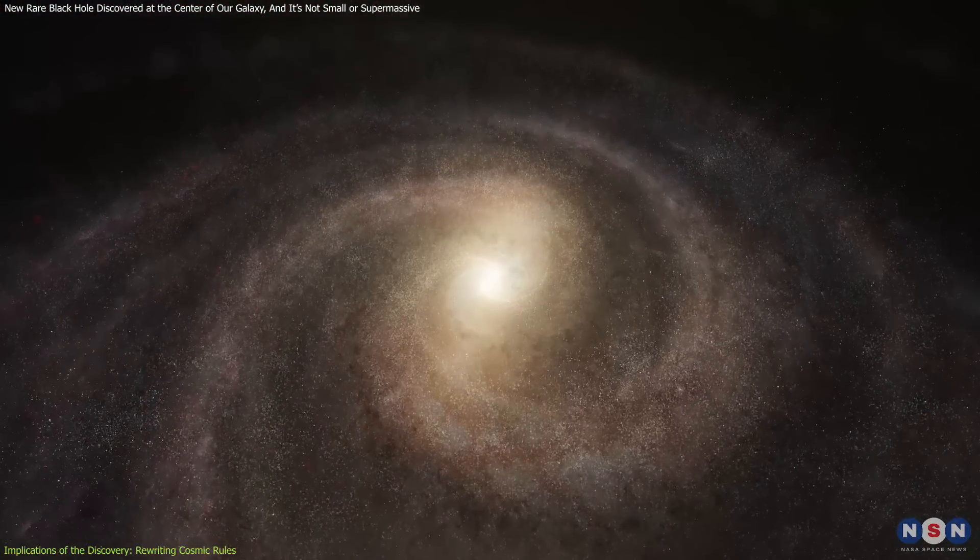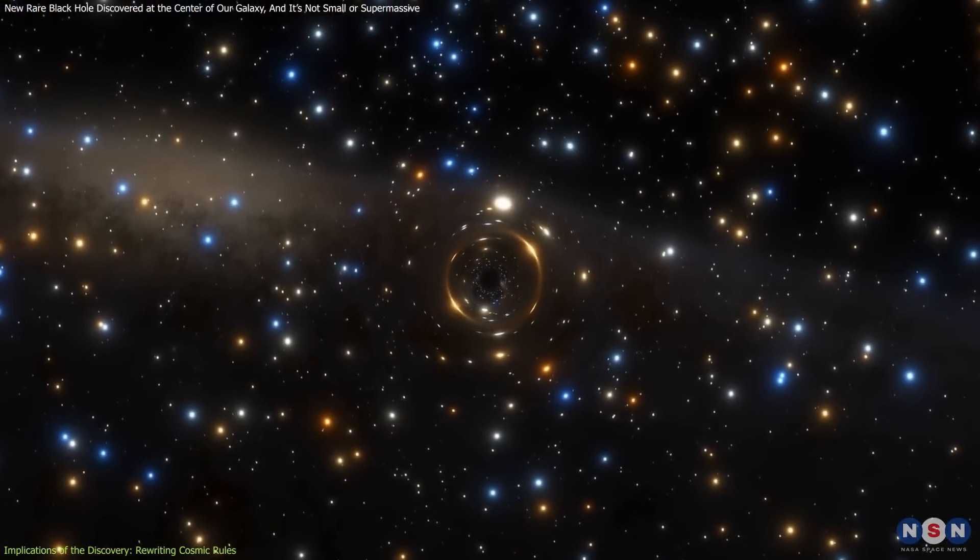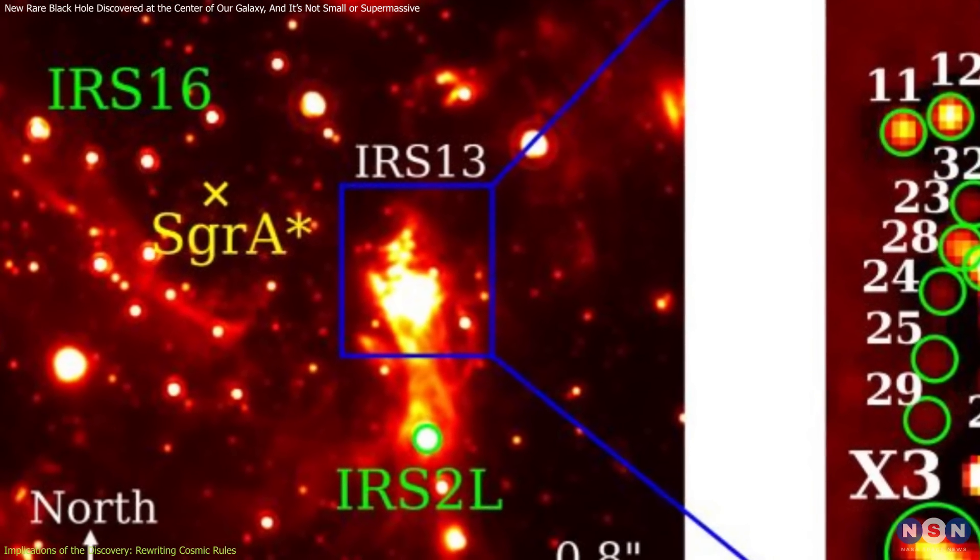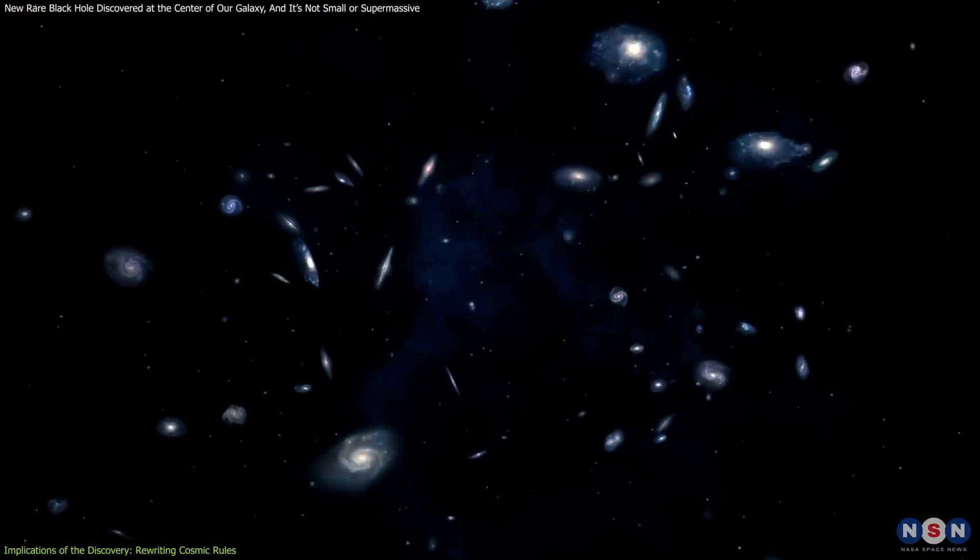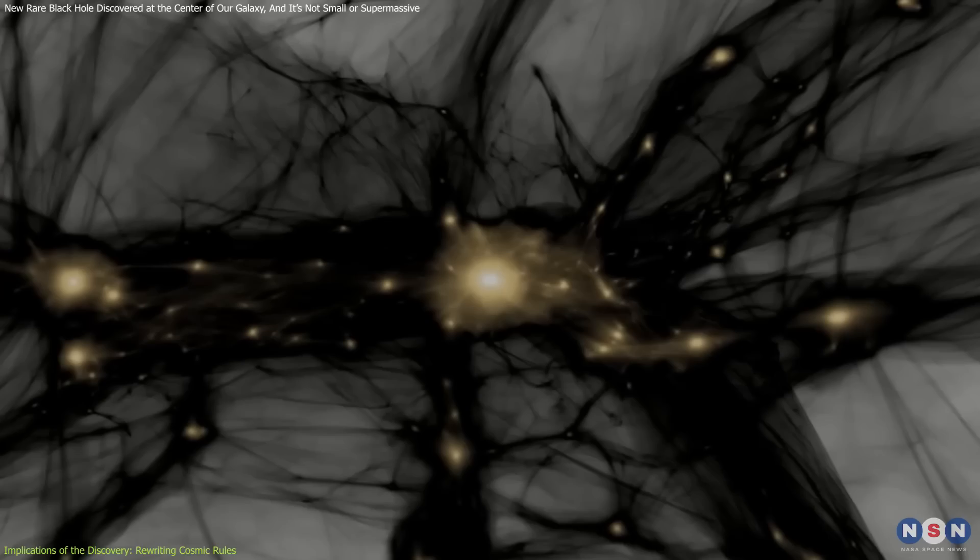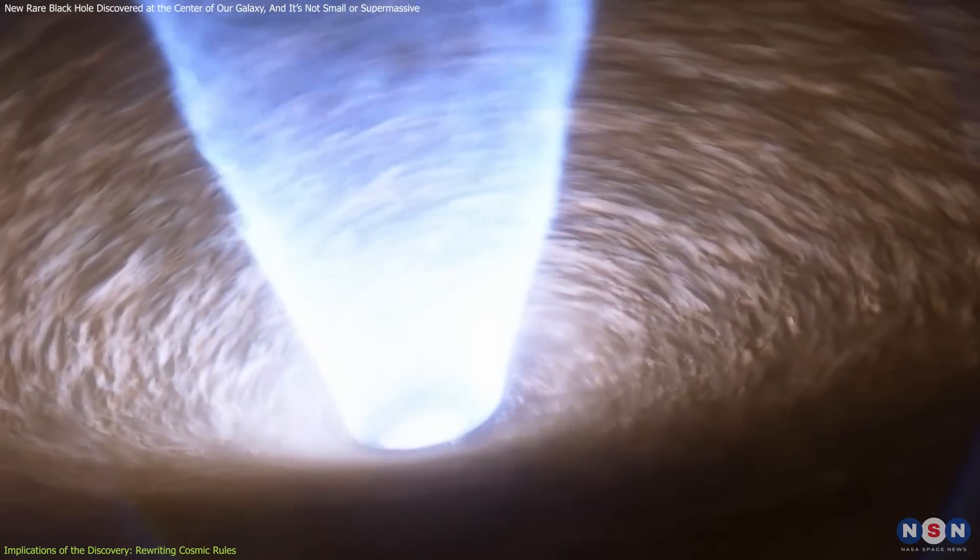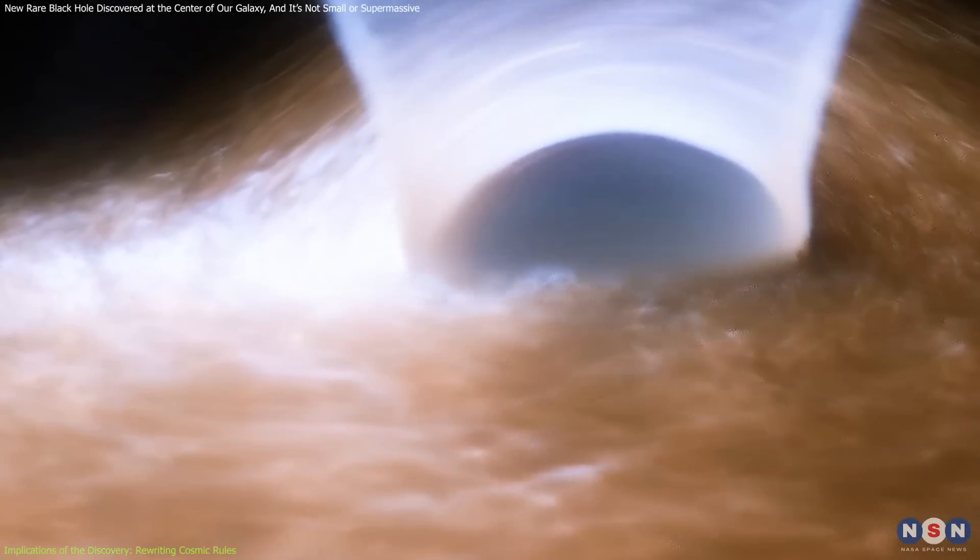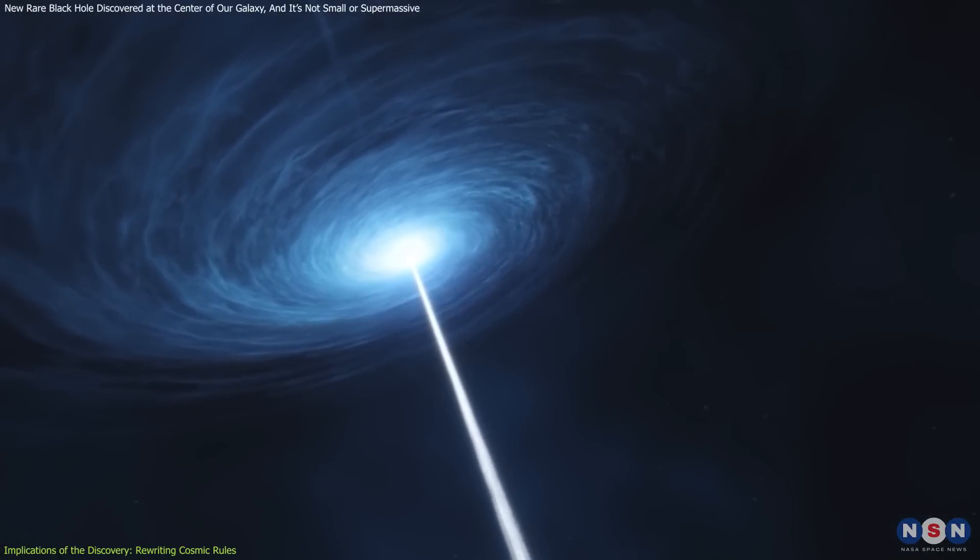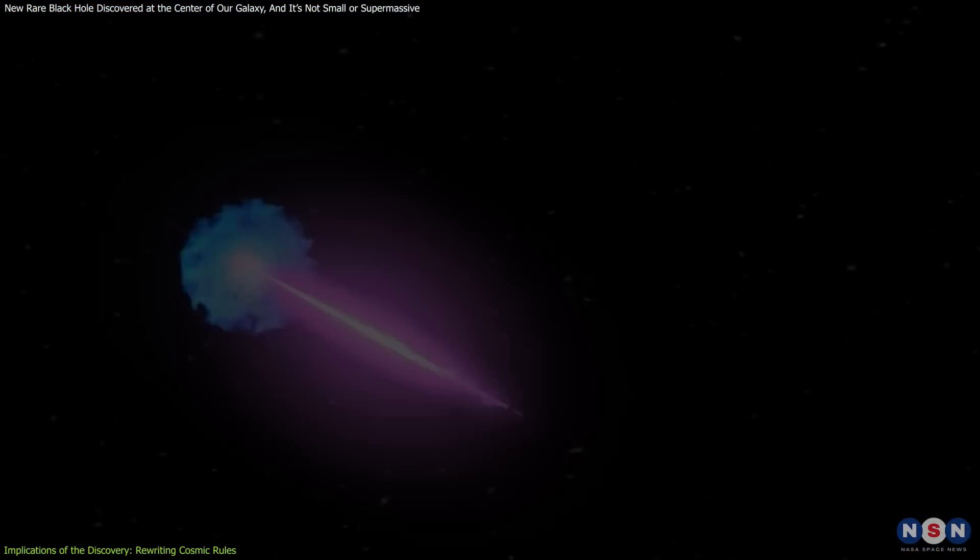This discovery also enriches our understanding of galaxy dynamics. The interactions between black holes and the stellar environments around them play a critical role in shaping galaxies. By studying how the intermediate-mass black hole in IRS-13 influences its surroundings, astronomers can infer similar processes in other galaxies, providing insights into the complex dance of stars, gas, and dark matter that shapes the universe. The energetic phenomena associated with this black hole, such as the emission of X-rays and the dynamics of ionized gas, provide a unique opportunity to study high-energy processes. These processes are key to understanding not only black holes, but also other high-energy astrophysical events like supernovae and gamma-ray bursts.